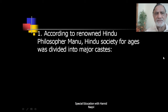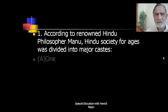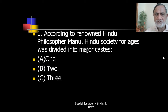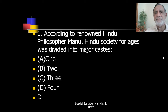First question: according to renowned Hindu philosopher Manu, Hindu society for ages was divided into major castes — one, two, three, or four. The correct answer is four. Hindu society was divided into four major castes.